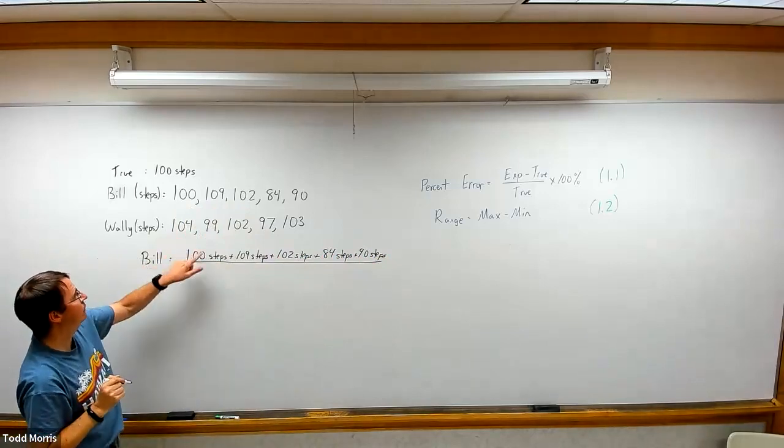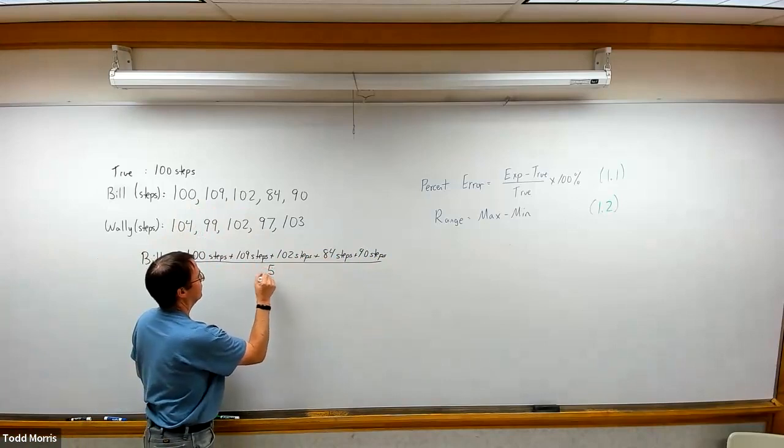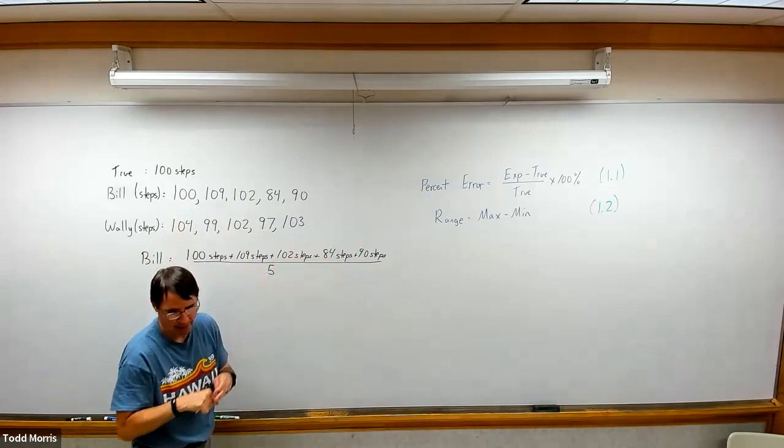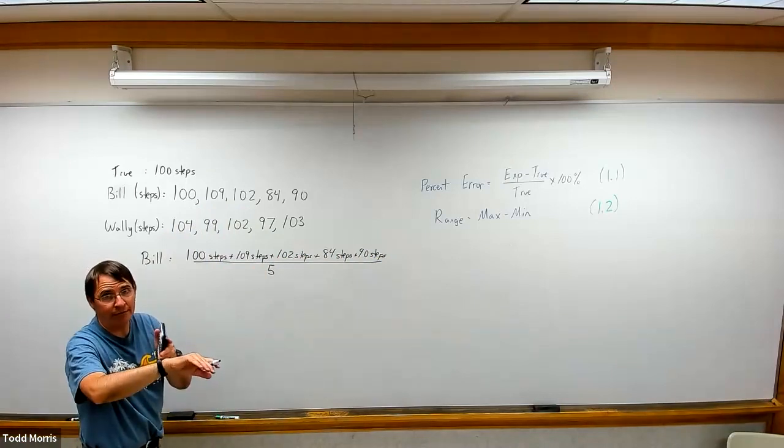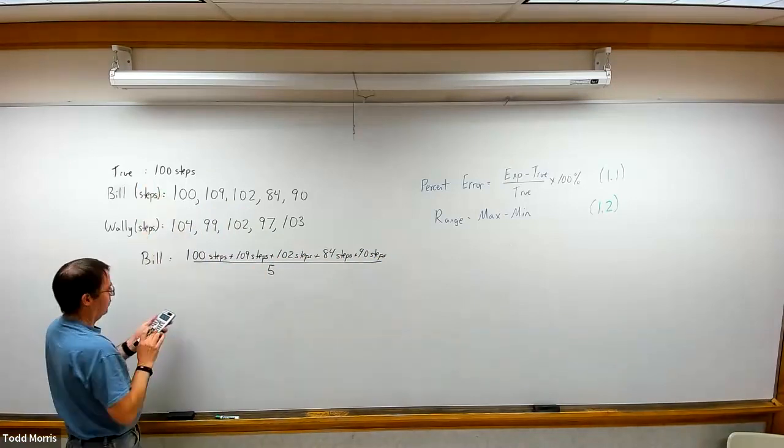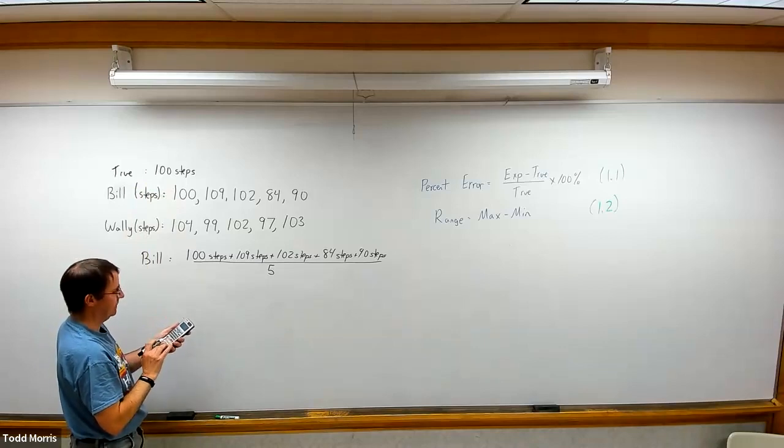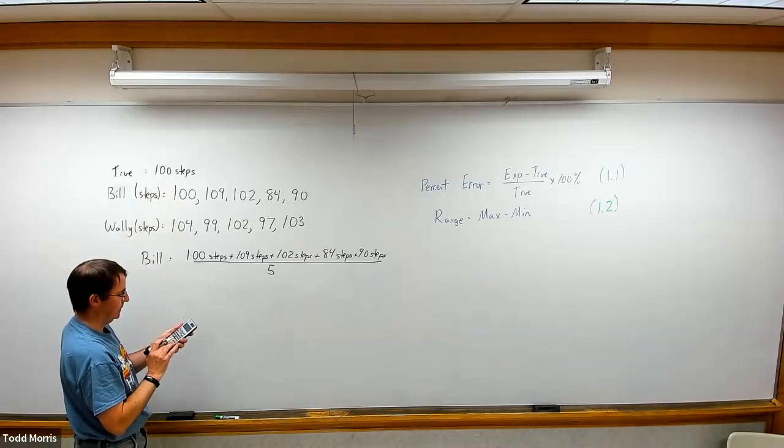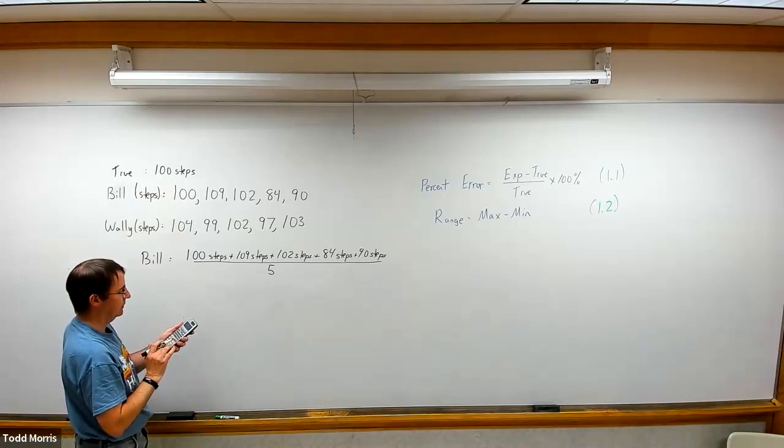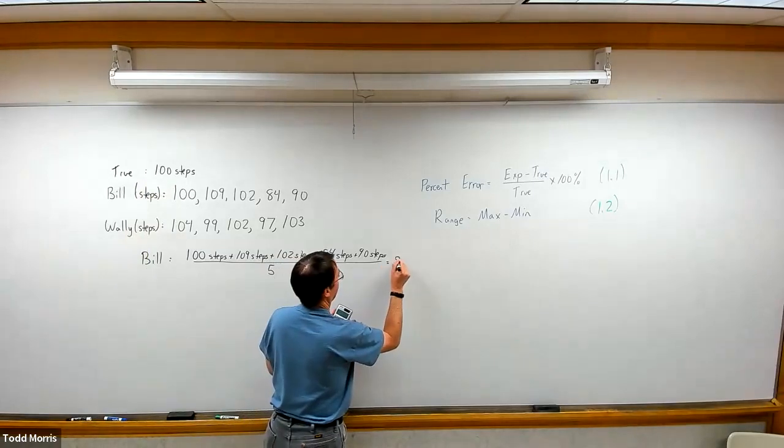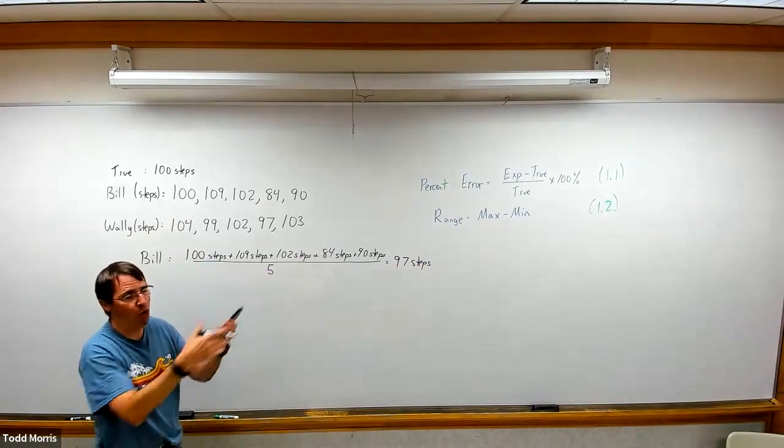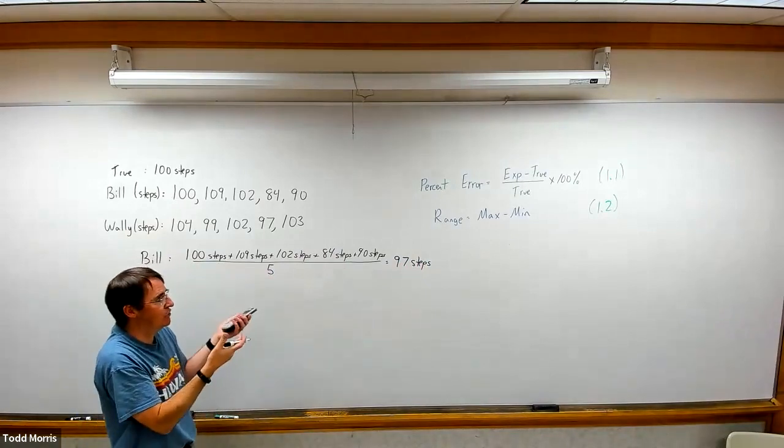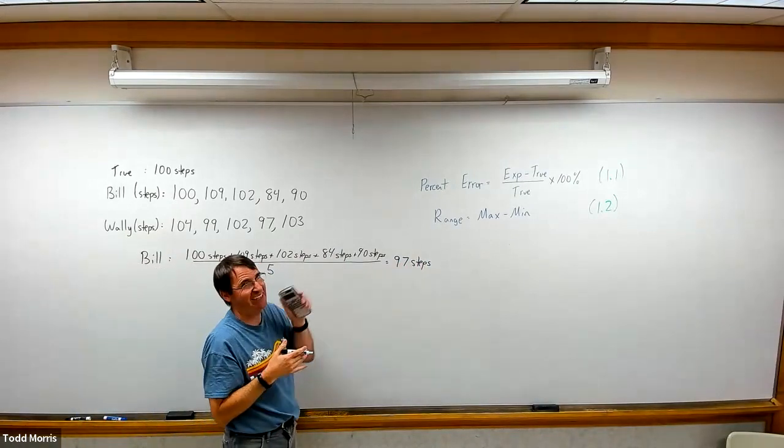Then divide that by the number of observations. In this case, we have five observations. So we divide that sum total by five to get the average number of steps as recorded by the fitness tracker when Bill took actually 100 steps. We have 100, plus 109, plus 102, plus 84, plus 90, divided by five. We get 97 steps.